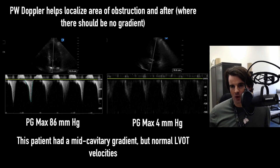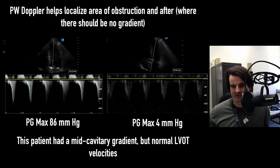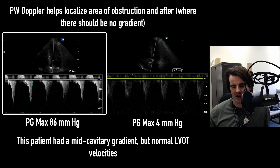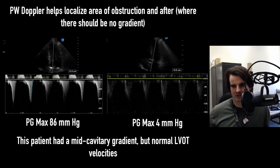Pulse wave Doppler helps to localize the exact area of obstruction. When you find the area with aliasing, go beyond the obstruction — you should see a drop in velocity as blood flow normalizes. Continuous wave Doppler shows the peak gradient, whereas pulse wave Doppler helps you understand exactly where the obstruction is located.